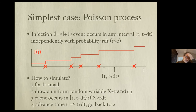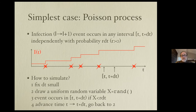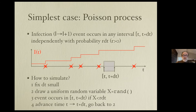To simulate this in a computer program generating I(t), one approach is to fix a small dt and for every interval increase I by one with probability r·dt — advancing time to t+dt and drawing a fresh random number each step. If that random number is less than r·dt, I increases by one; otherwise it doesn't.